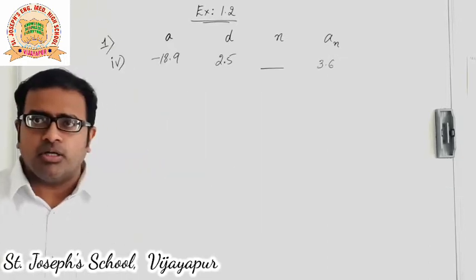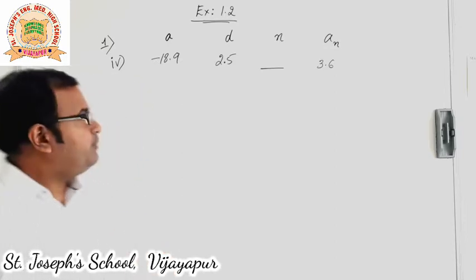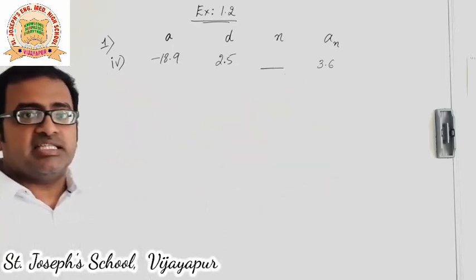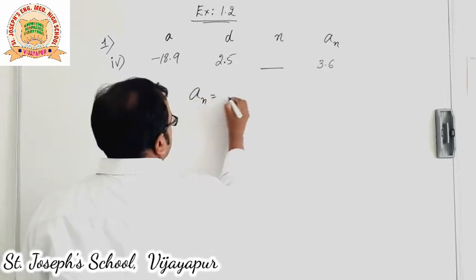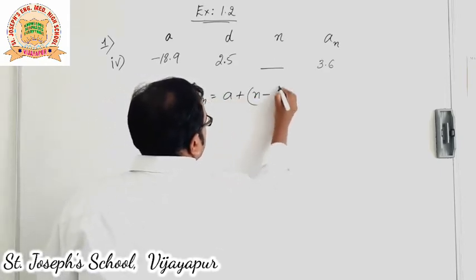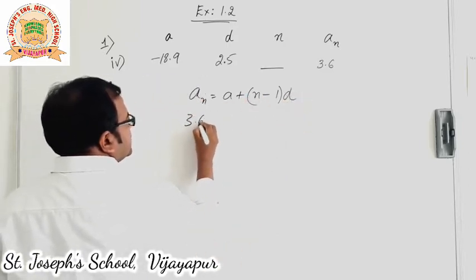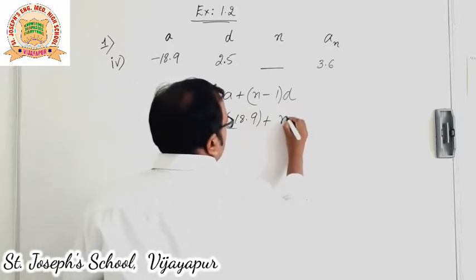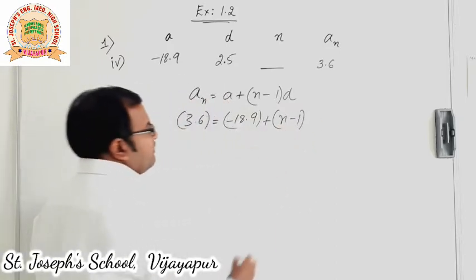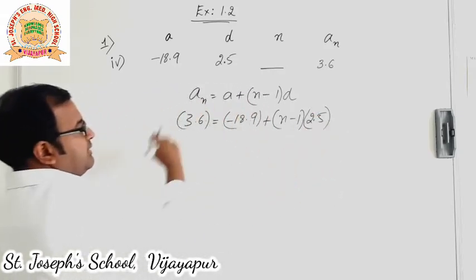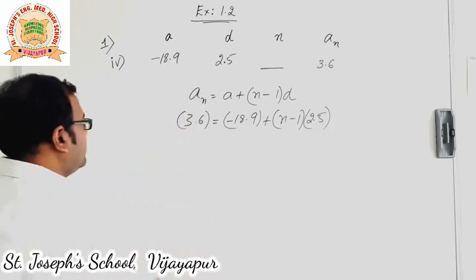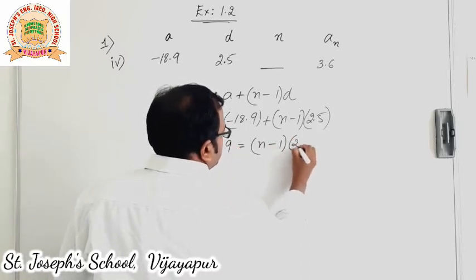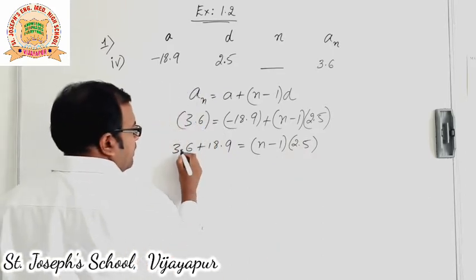Sub question 4: we know a, we know d, and we have to find out n. We know the last term 3.6 as an. Now I will use the an formula: an is equal to a plus n minus 1 into d. An value is 3.6, which is equal to a, that is minus 18.9, plus n minus 1 — we do not know n, we will keep it as it is — into d which is 2.5. Next step: minus 18.9 comes to the other side and becomes plus 18.9. So 3.6 plus 18.9 is equal to n minus 1 into 2.5. Adding these two, after the decimal place 6 plus 9 is 15, carry 1; then 8 plus 1 plus 3 is 12, carry 1; then 1 plus 1 is 2. So decimal after one place: